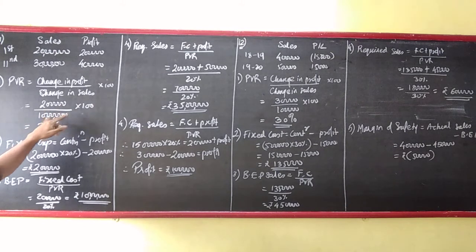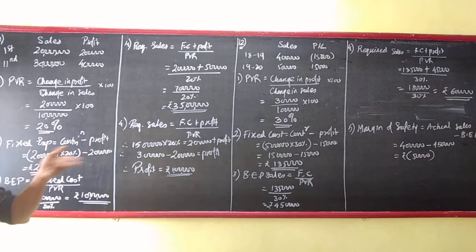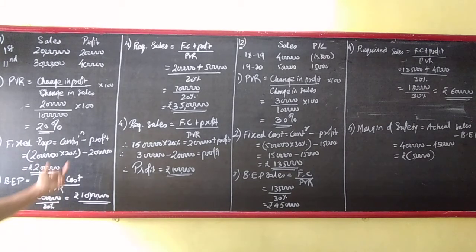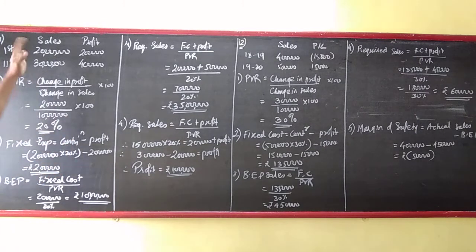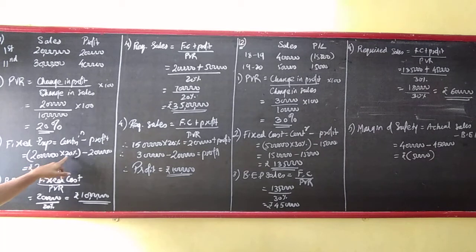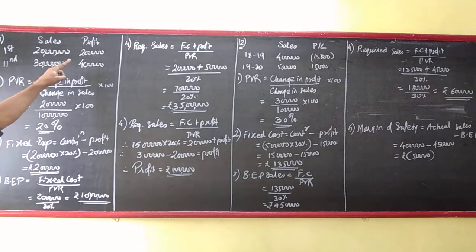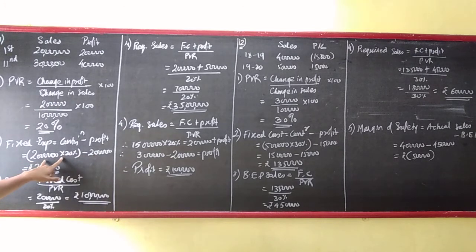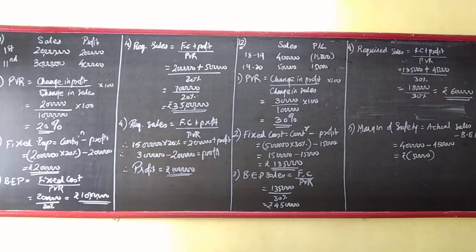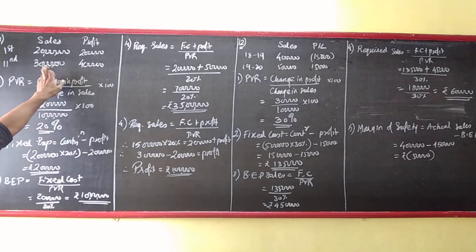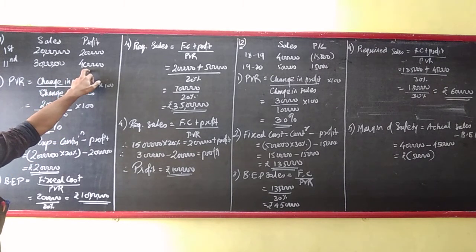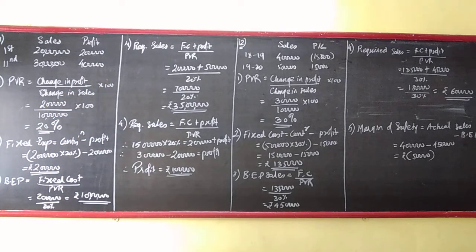Second, they have asked fixed expense. Fixed expense is contribution minus profit, but contribution is equal to sales into PVR. So 20 lakhs into 20%, that is 4 lakhs minus profit, that is 2 lakhs. So fixed expenses are those which do not change with time. In the second stage also it is 2 lakhs, so we are correct. You can verify your answer whether you are right or wrong.